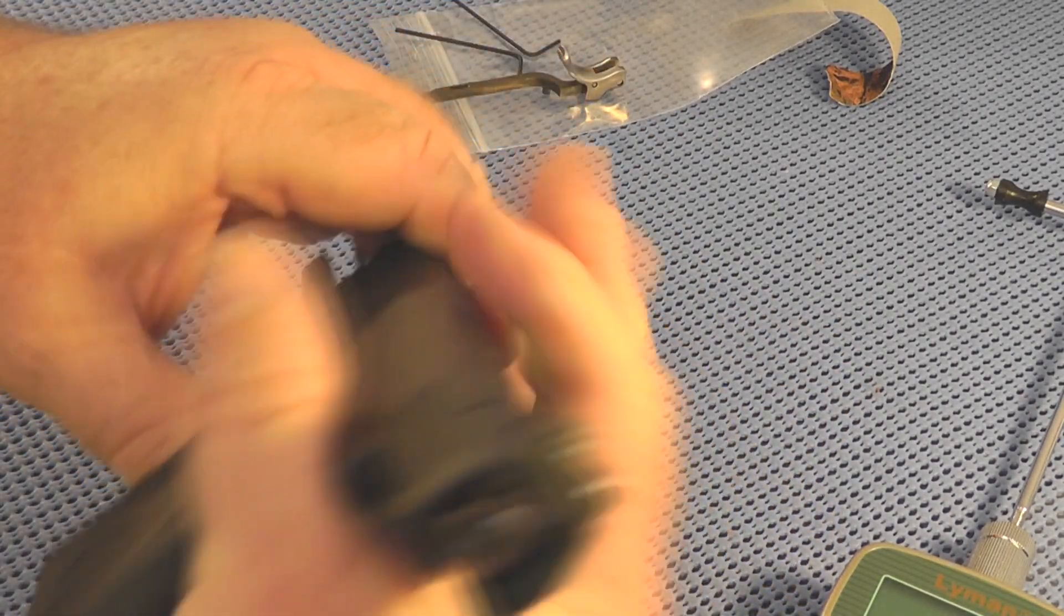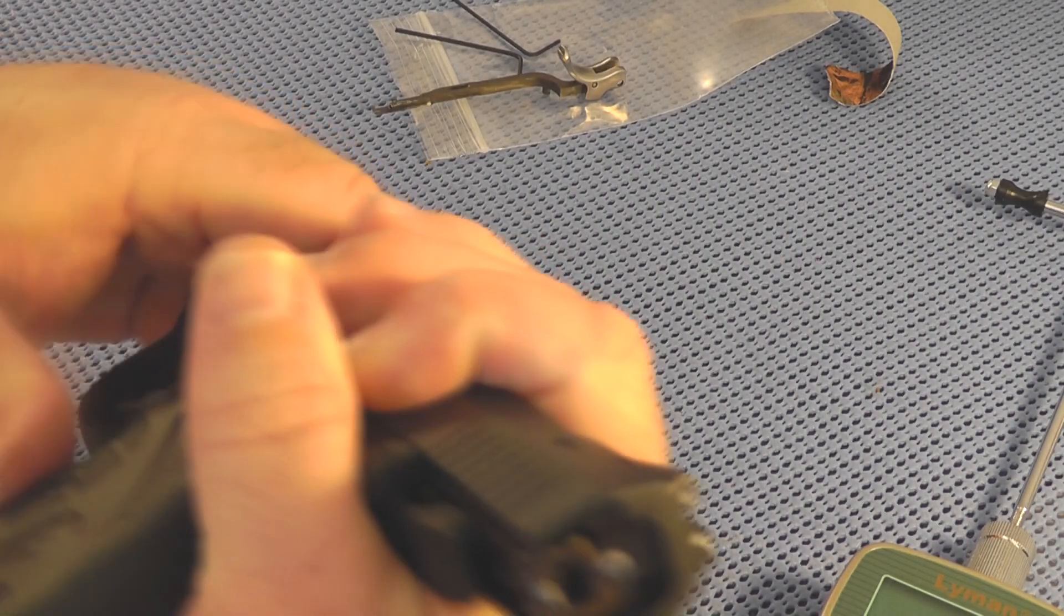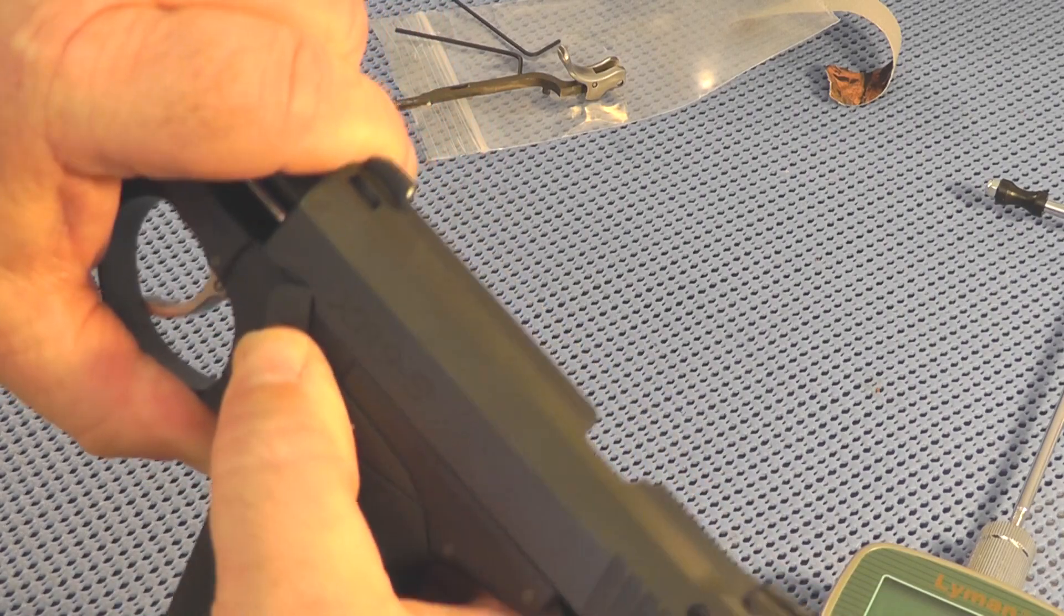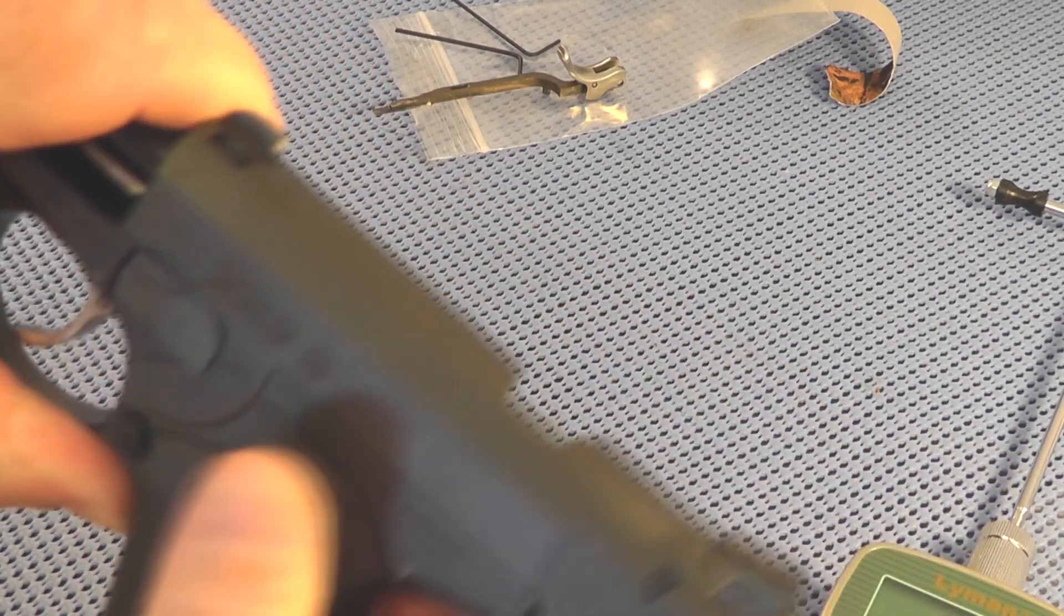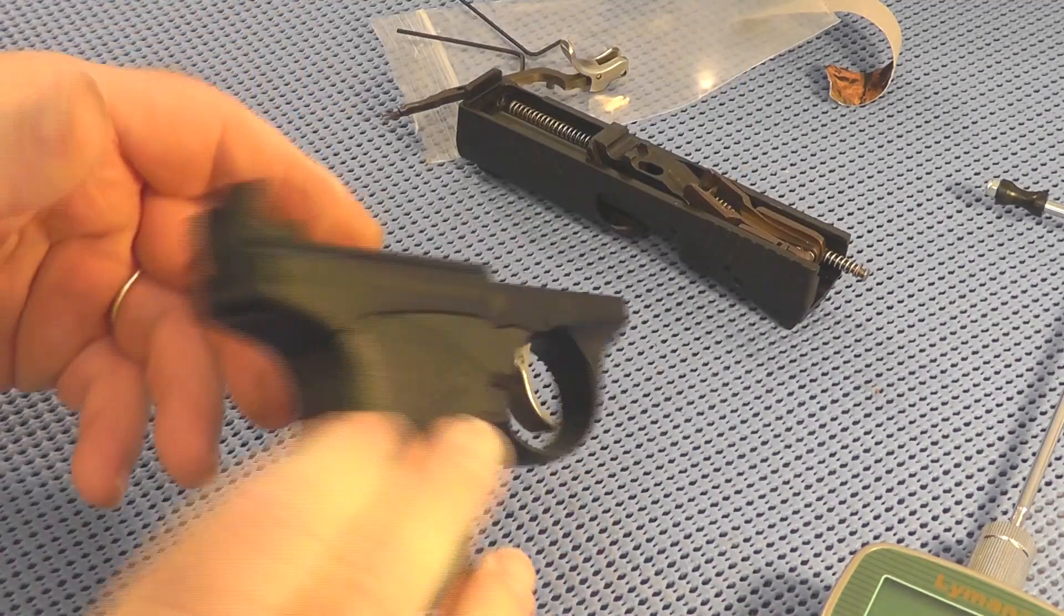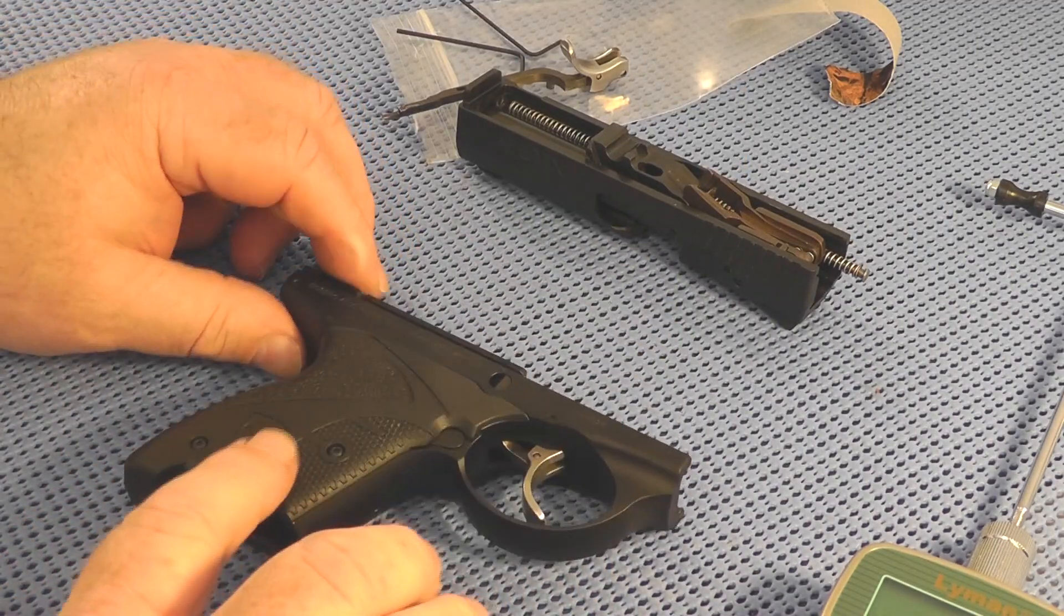Pretty simple. Just push the slide back and turn that takedown lever 180 degrees, and the slide comes right off. Very simple engineering.